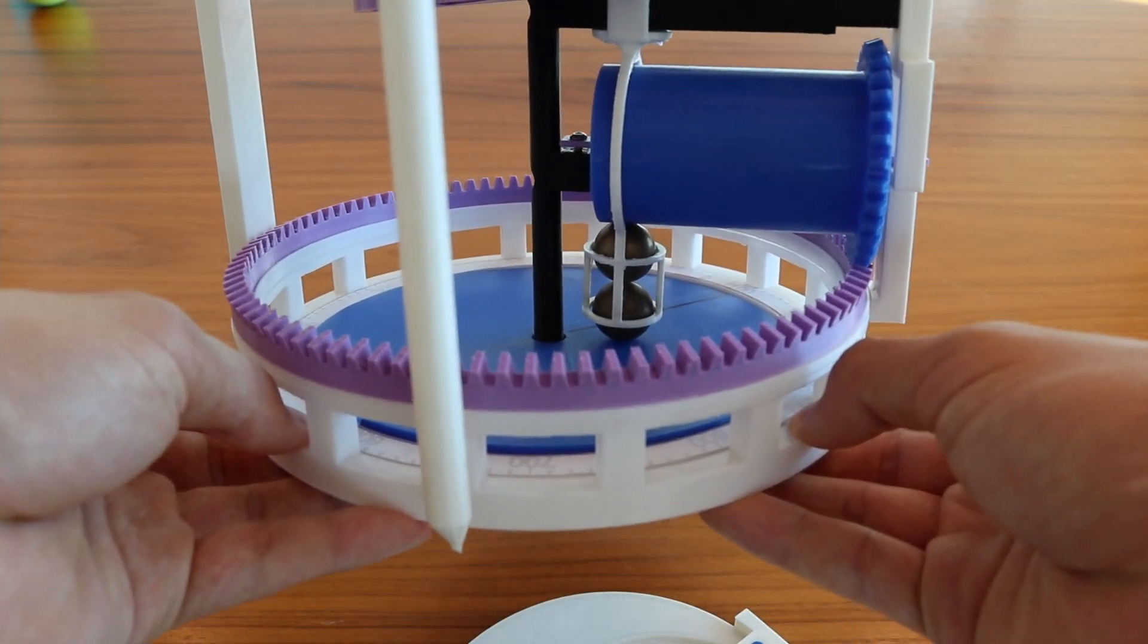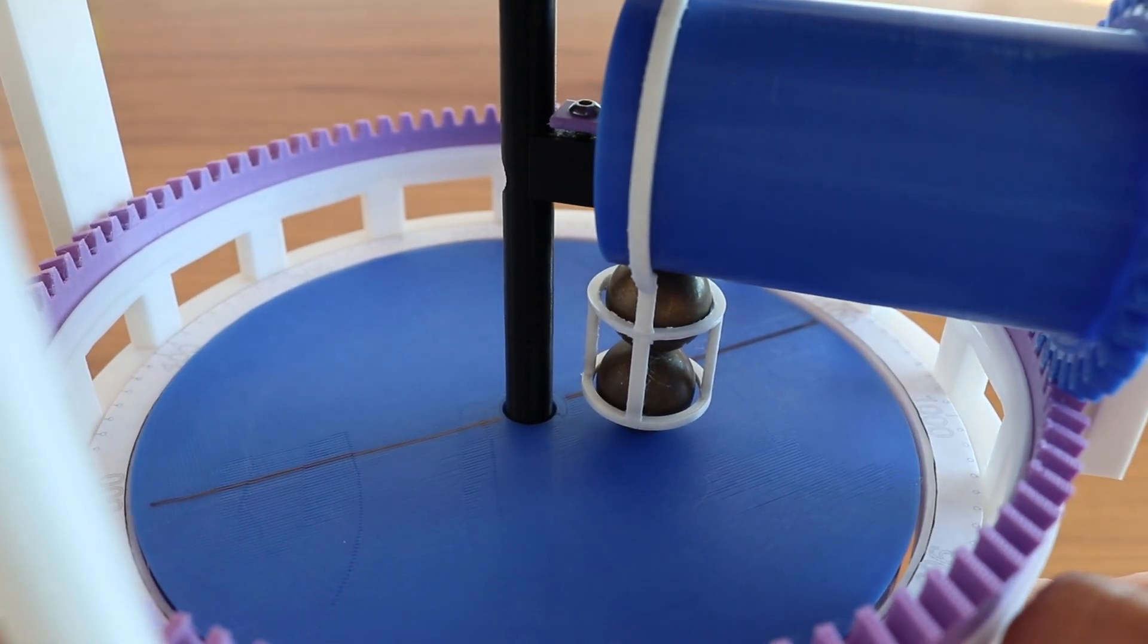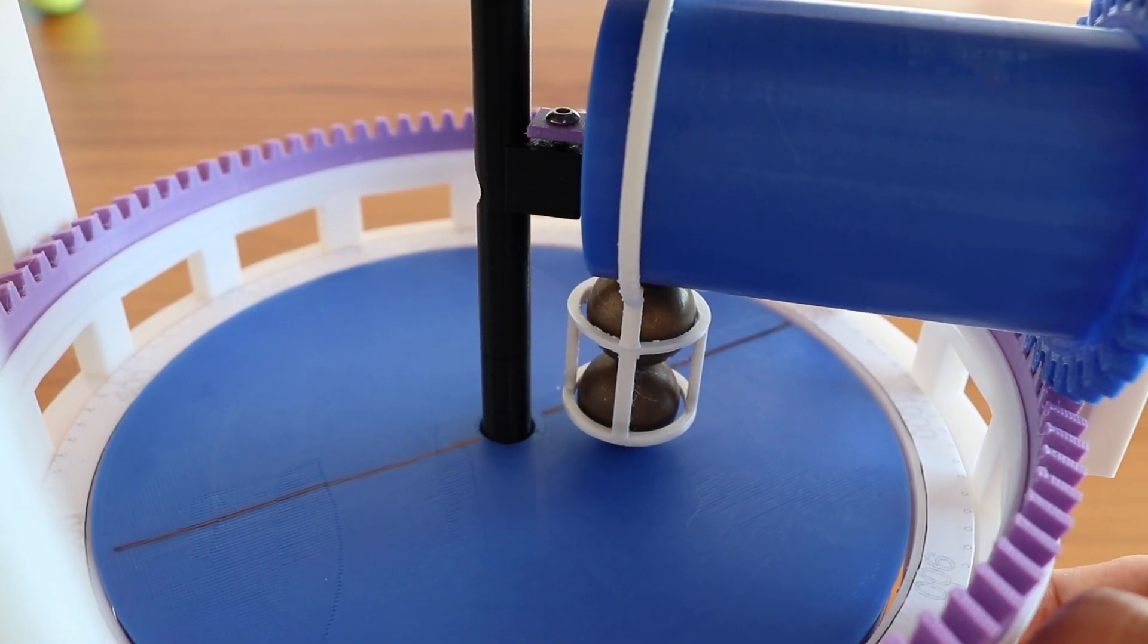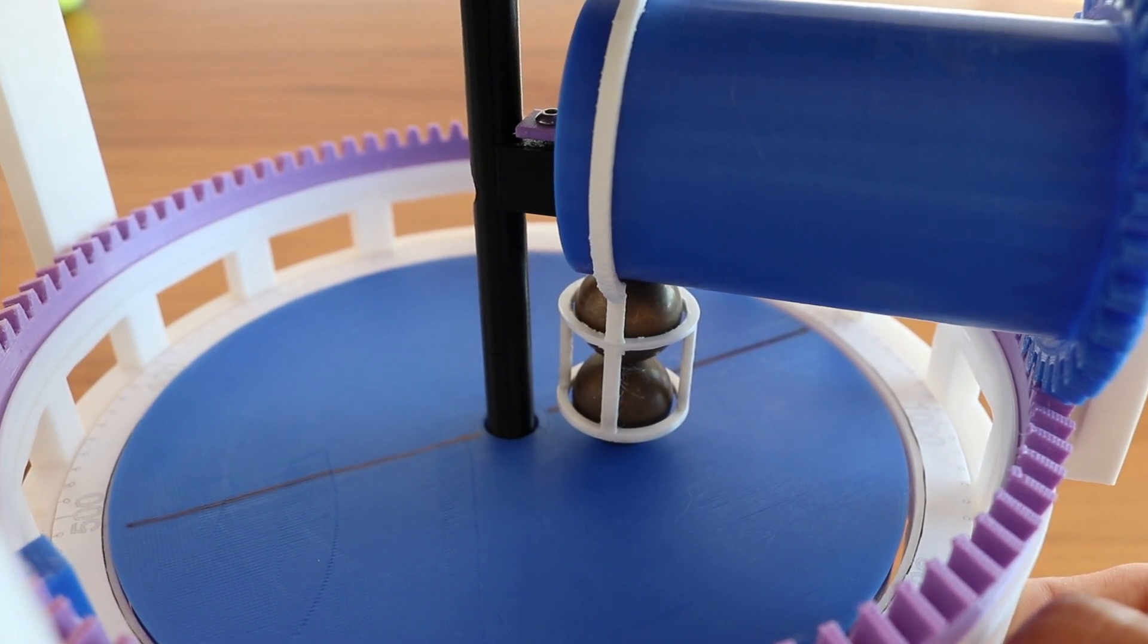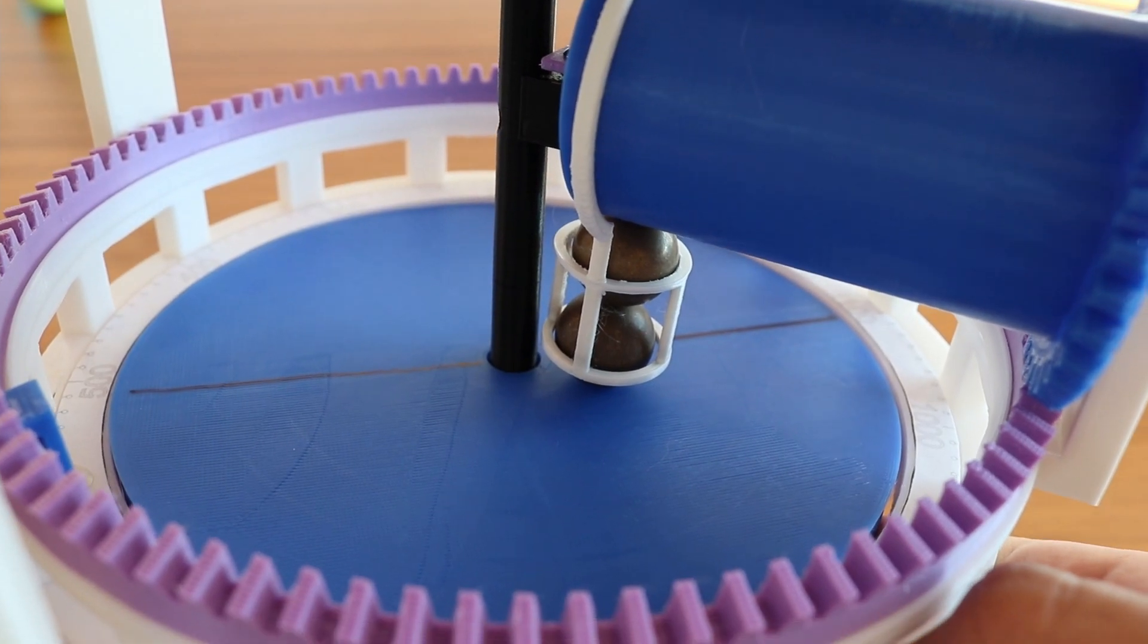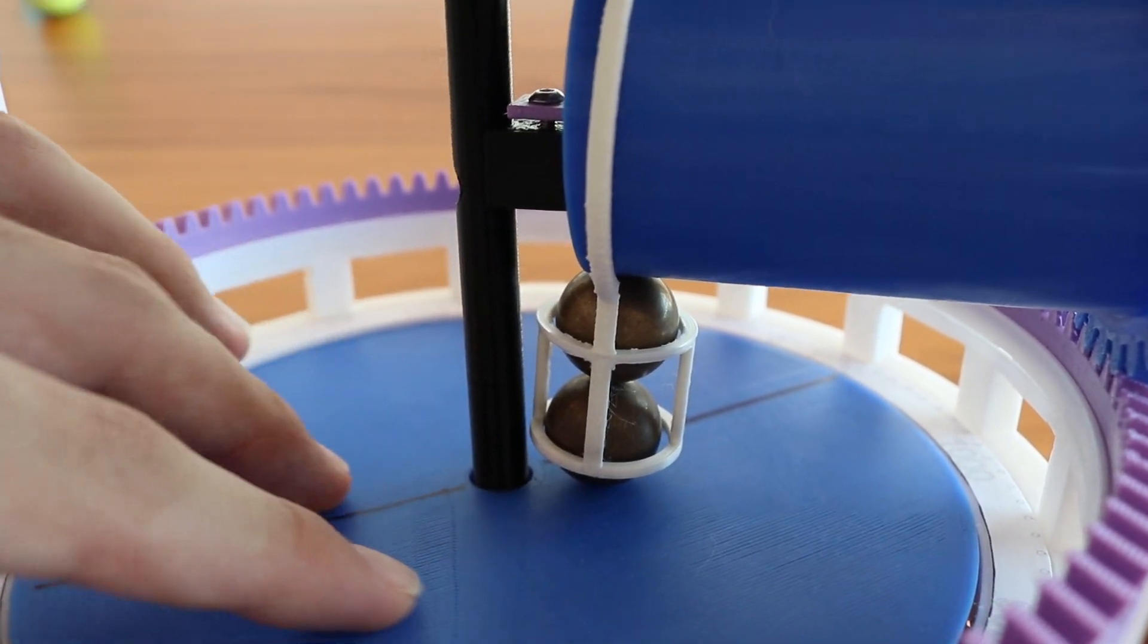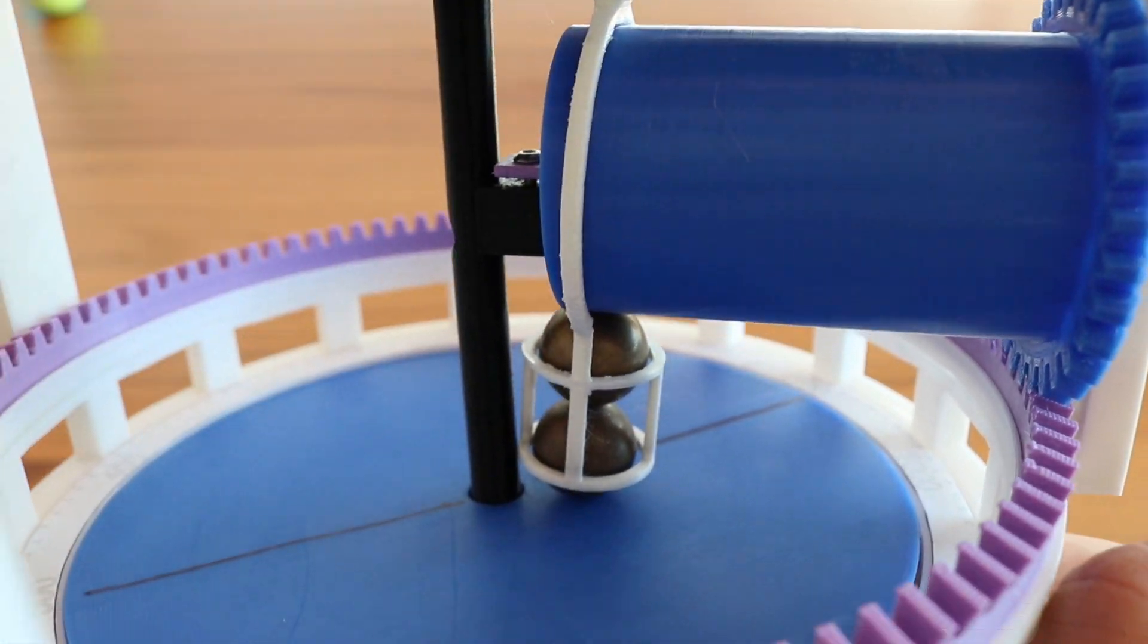Or at least that would be the case if the mechanism actually works. That's right, this mechanism doesn't actually work. It doesn't actually show the area of a curve when you trace it. And that's because the one big problem my friend and I had throughout the design process is trying to get the balls to have enough friction to grip against the bottom surface and also against the barrel.